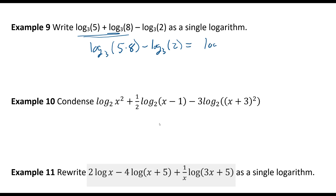So it's log base 3 of 40 over 2 — since 5 times 8 is 40. So that equals 40 over 2, and that gives us log base 3 of 20.